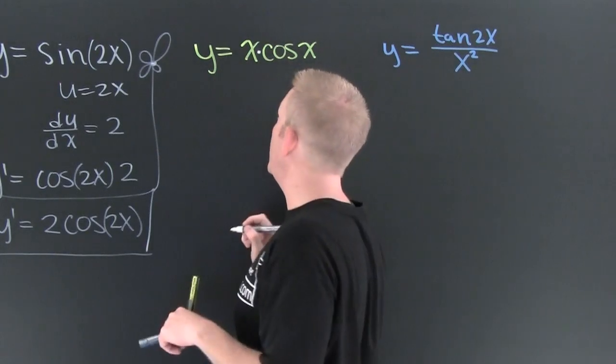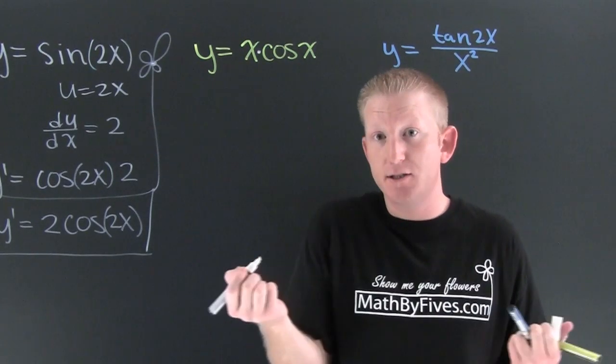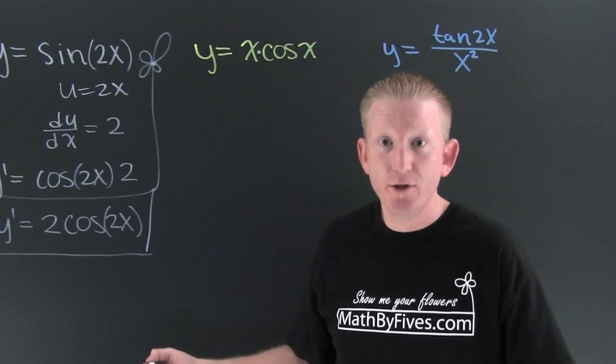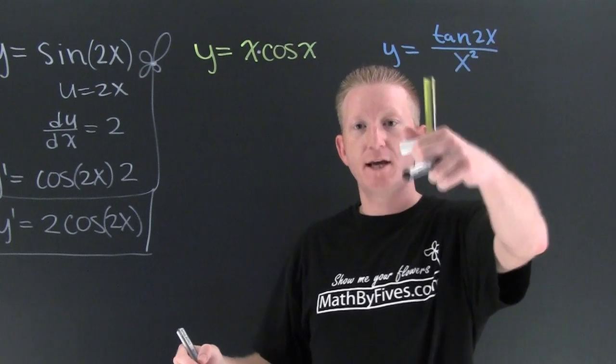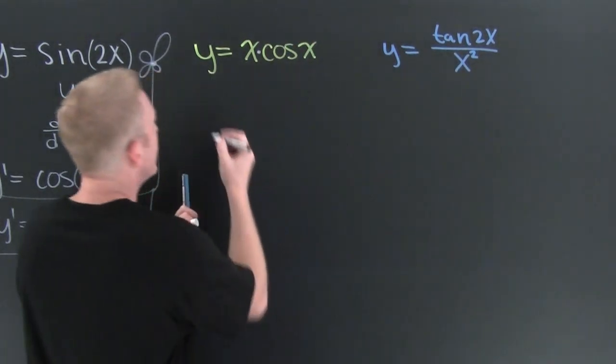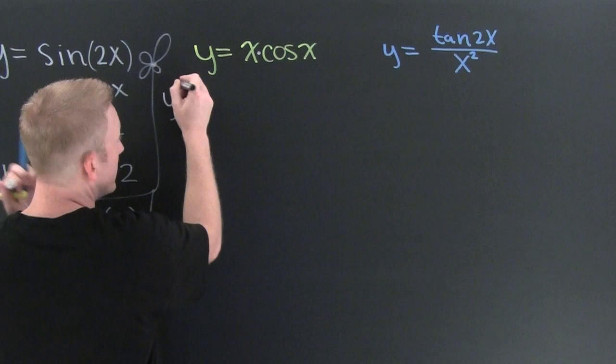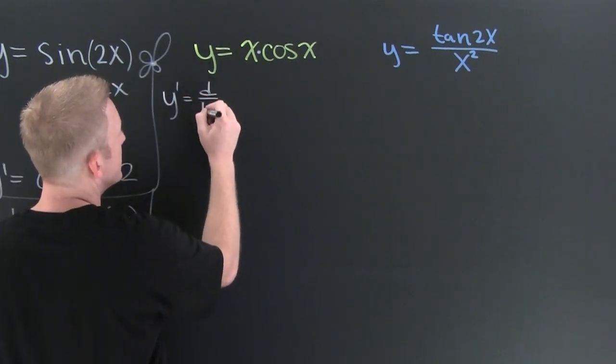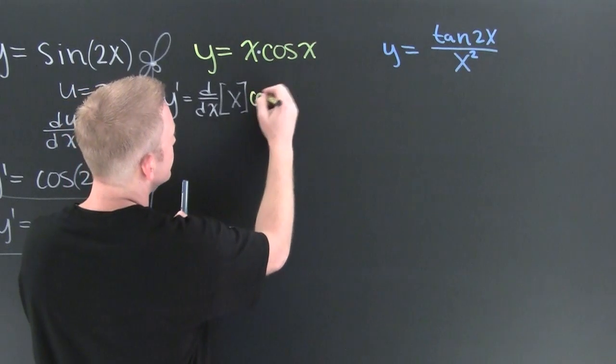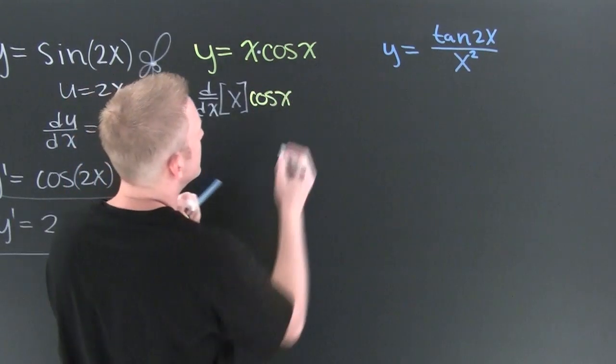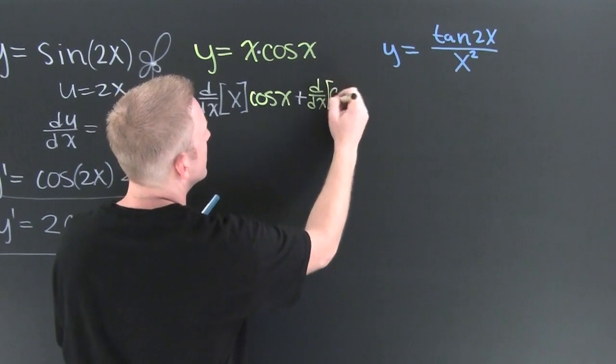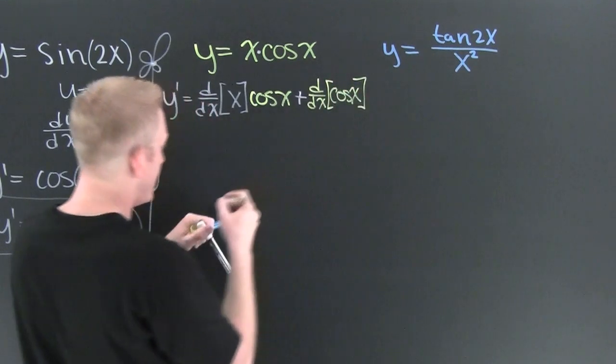On this next example, we see we got a product. I wish I had a rule to take the derivative of a product, and if I did, what would I call it? The product rule, yes. We know how that one goes. It's the derivative of the first times the second plus the derivative of the second times the first. Here we go. We're taking a look at the derivative. It's the derivative of the first times the second plus the derivative of the second times the first.